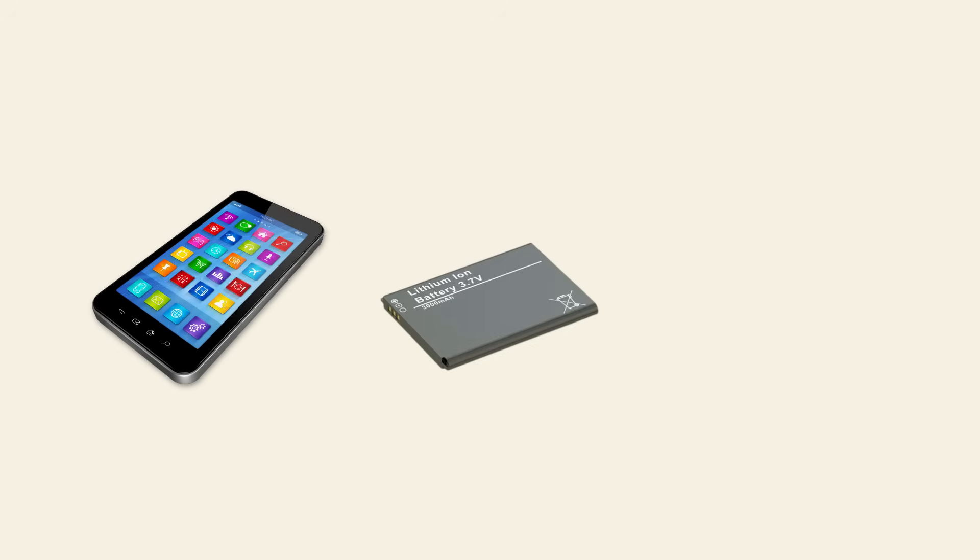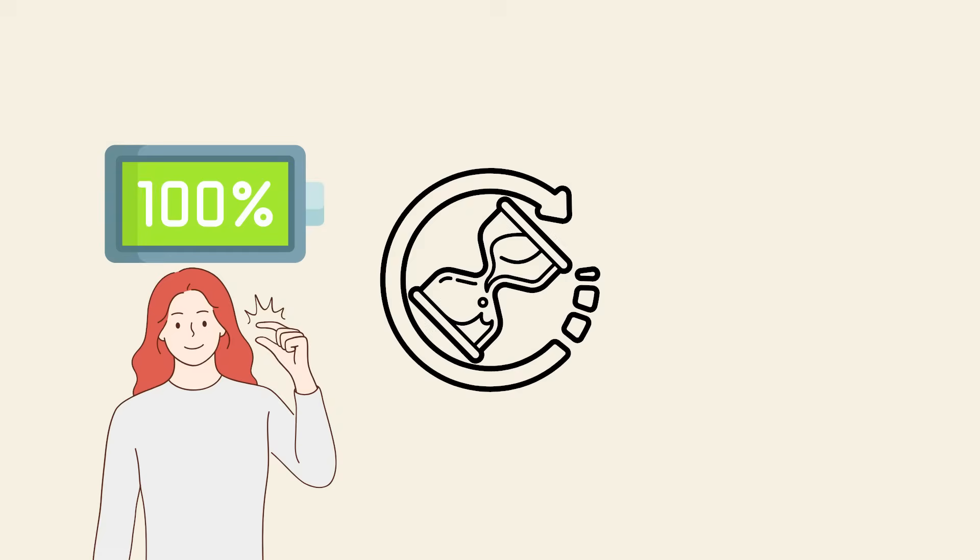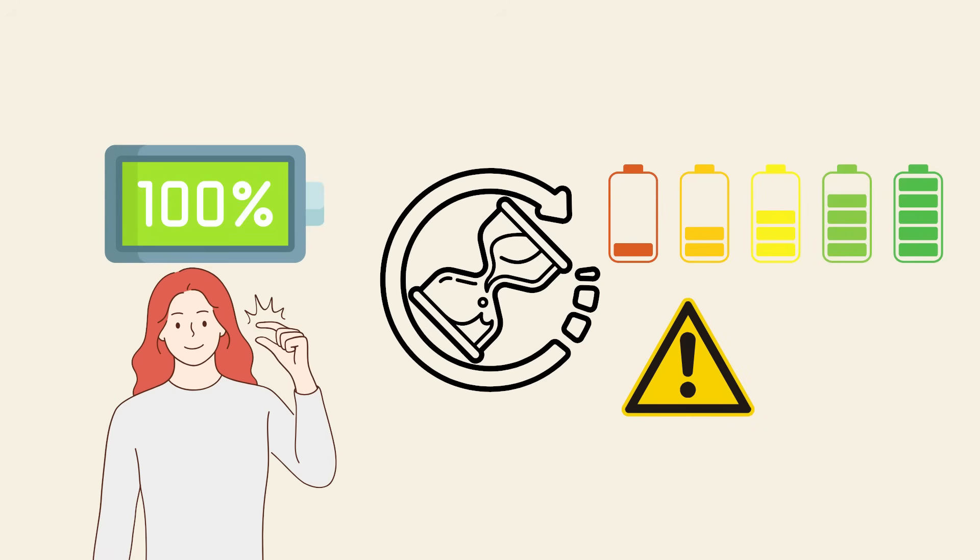Most smartphones use lithium-ion batteries, which store energy through chemical reactions. Over time, these reactions become less efficient. Each full charge cycle slightly wears down the battery's ability to hold charge, due to buildup of chemical residue and micro damage to the battery's internal structure.